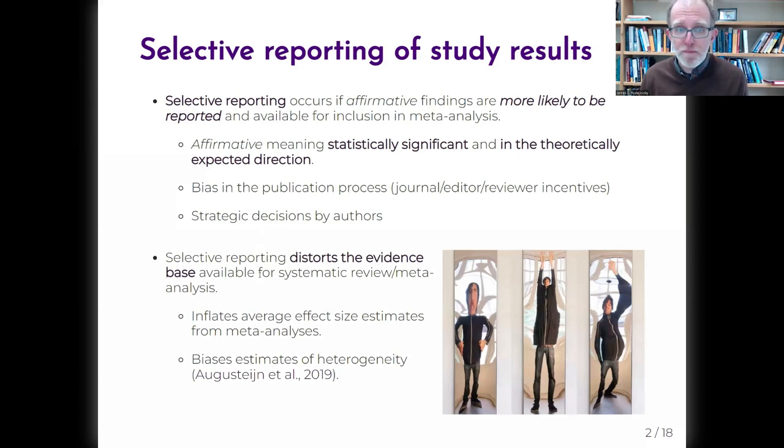Selective reporting is a big deal. It's a major concern for research synthesis because it distorts the evidence base available for meta-analysis, kind of like a funhouse mirror distorts your appearance. It leads to upward biases and estimates of average effect sizes and complex biases and estimates of heterogeneity, all of which makes it all the more difficult to draw conclusions from a synthesis.